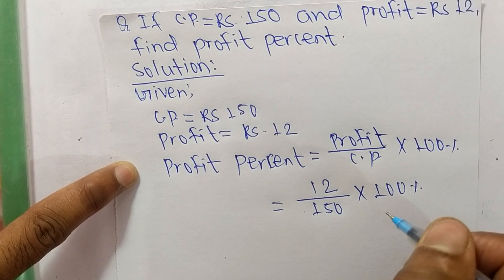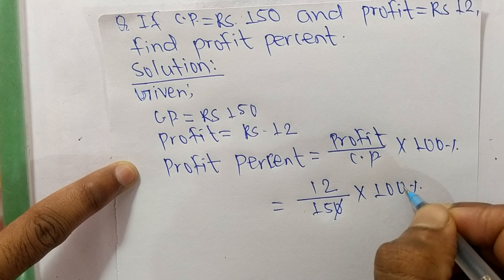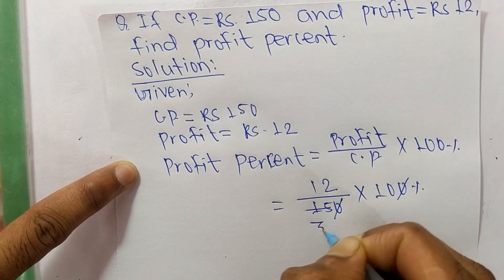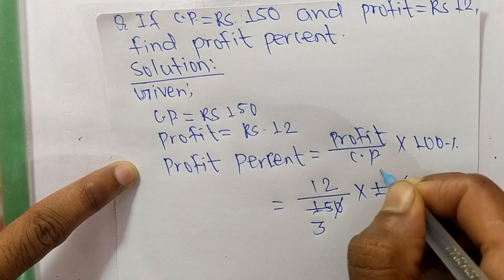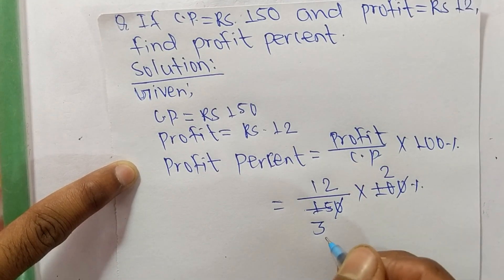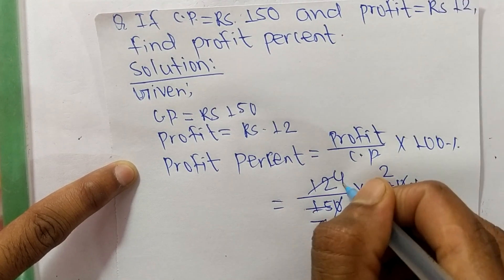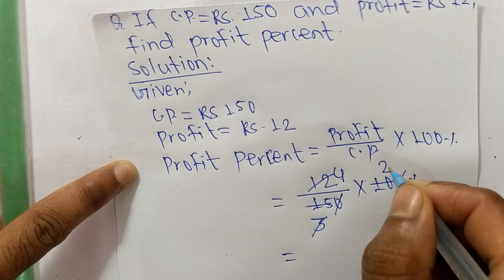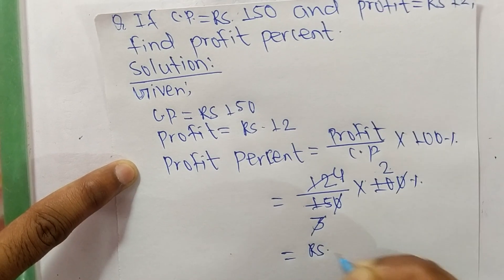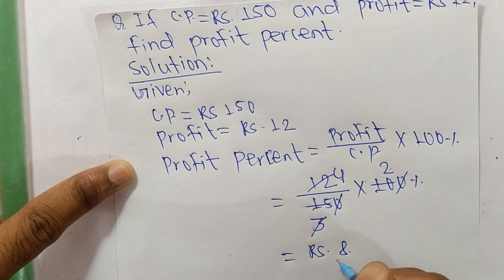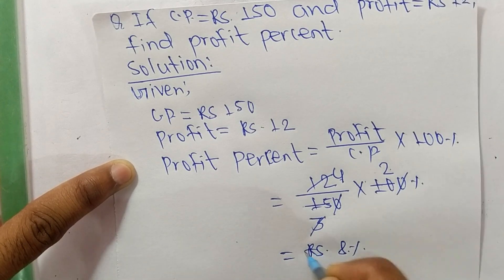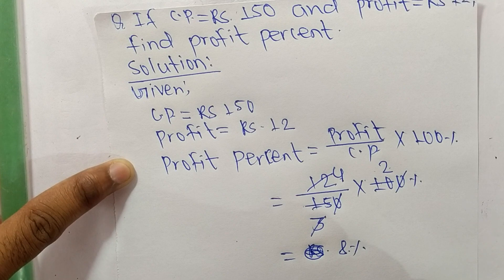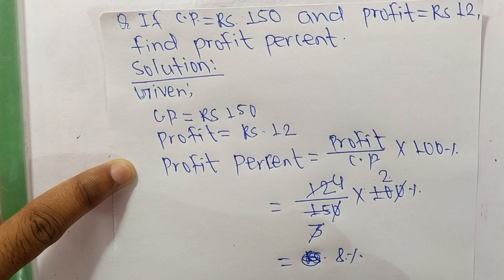Now we cancel these numbers: the zero cancels, giving 12 over 15. Then 5 times 3 is 15 and 5 times 2 is 10, and 3 times 4 is 12, so we get 4 times 2 which is 8. So profit percent is equal to 8 percent. That's it for today, thanks for watching.